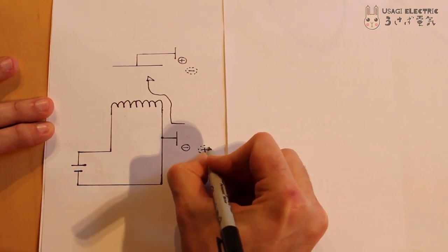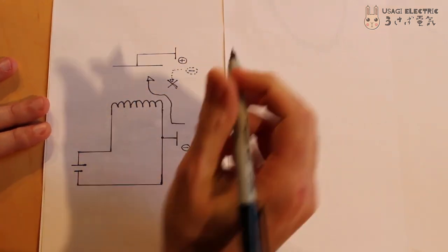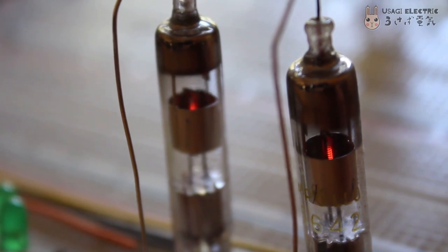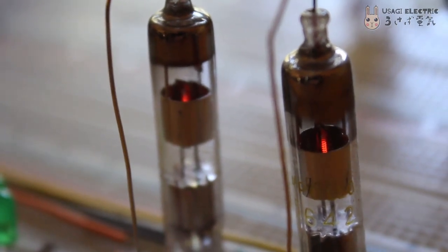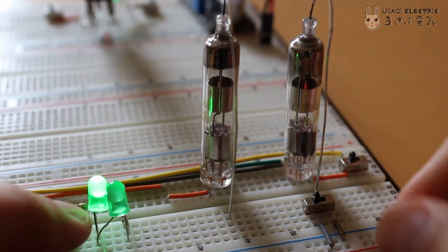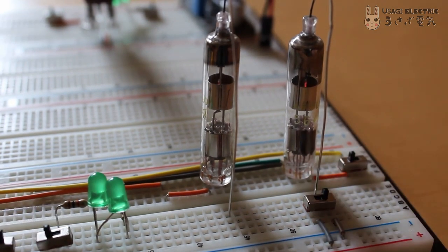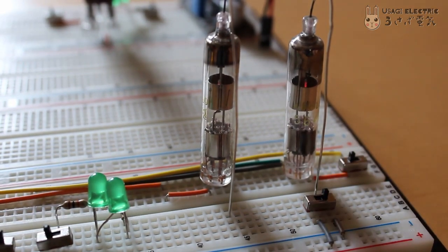This creates a one-way valve for electrons, otherwise known as a diode. Here you can see a 5642 directly heated diode being used to light an LED. When the charge is reversed, the second LED would light up if the diode wasn't doing its job.